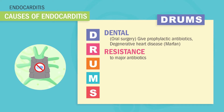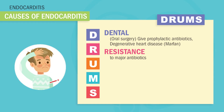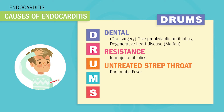Which brings up our next point — U. U is for untreated strep throat and even untreated rheumatic fever. This is a main cause and a huge test tip. Untreated strep throat can lead to an even nastier infection called rheumatic fever, also known as rheumatic heart disease, then to endocarditis, and then to death.